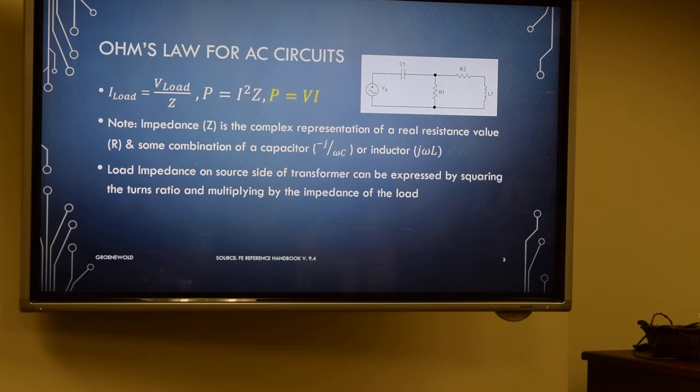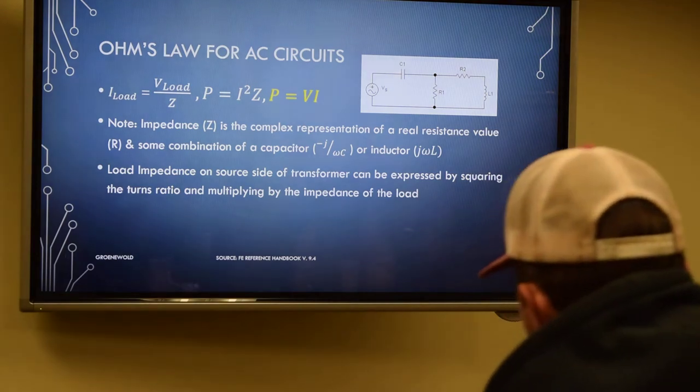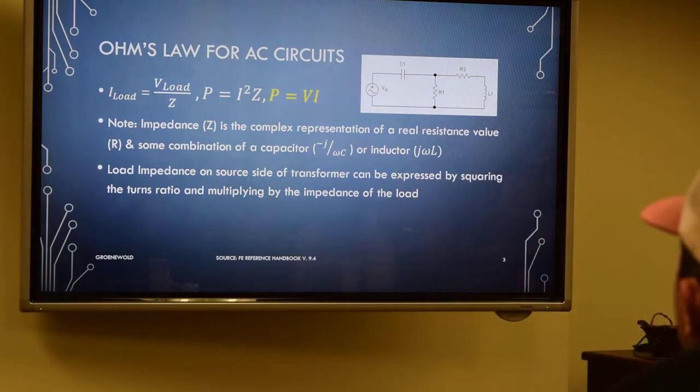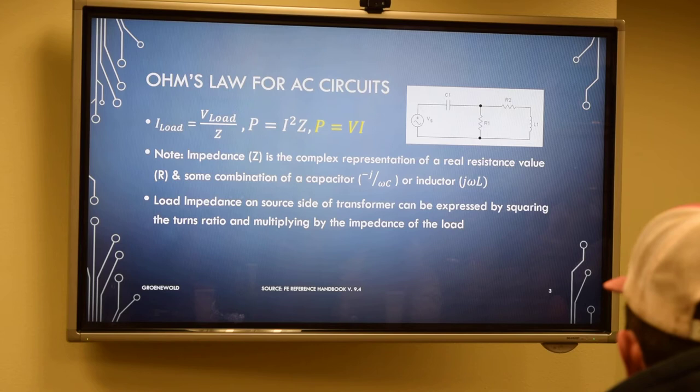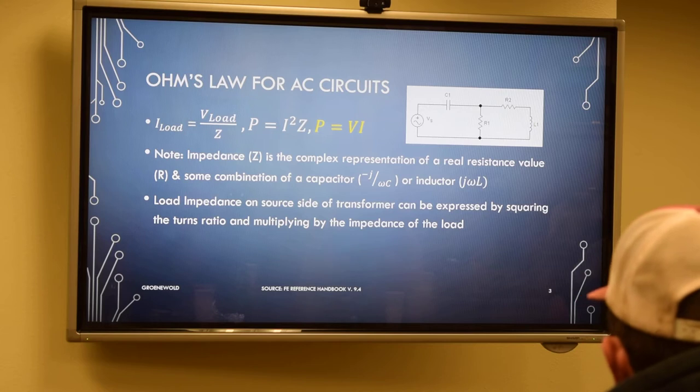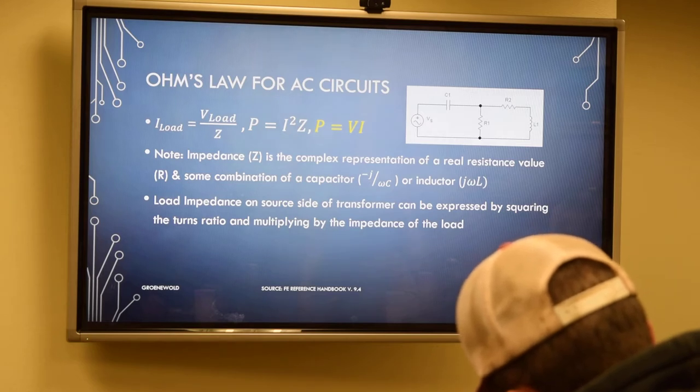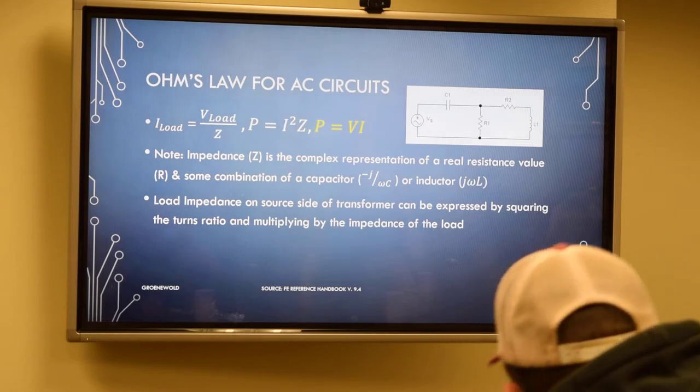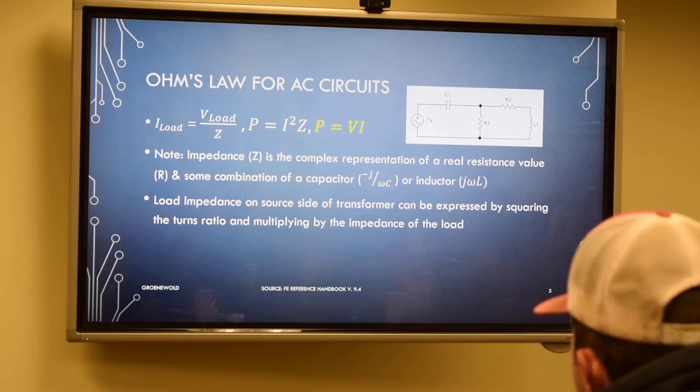Impedance is the complex representation of a real resistance value, which would be your R1 and your R2, and some combination of the capacitor, which is the C1, or some form of inductor. Each power line will have its known resistance and impedance value. When you're trying to calculate any load impedance, a load impedance on the source side of a transformer can be expressed by just squaring your turns ratio and multiplying by the impedance of the load side.